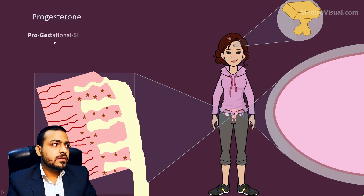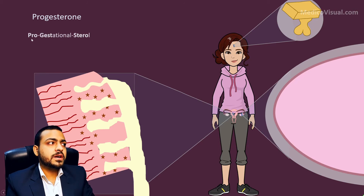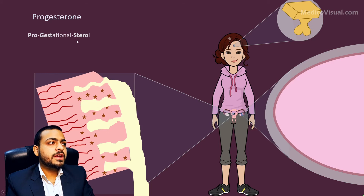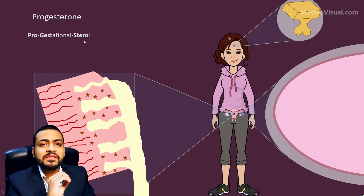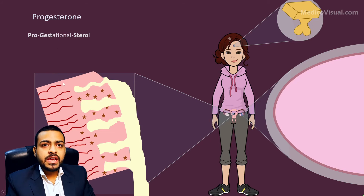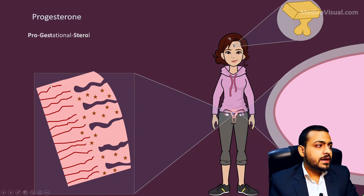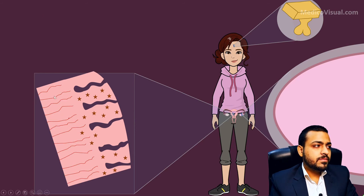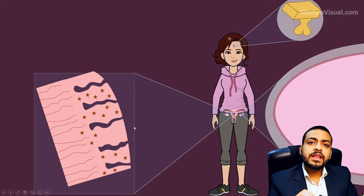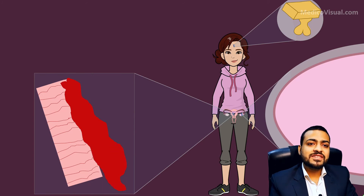Progesterone is needed to maintain these layers — it is a progestational steroid. The name progesterone comes from progestational steroid; progestation means pregnancy — it is the hormone of pregnancy. As its level declines, these two additional layers of the endometrium undergo ischemic necrosis. They stop secreting uterine milk, there is severe vasoconstriction in the basal layer, the layers do not get enough blood, ischemia occurs, they shed off and bleeding follows — that is called menstruation.